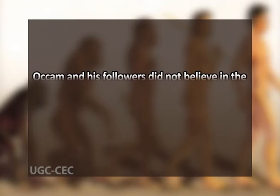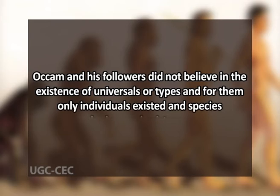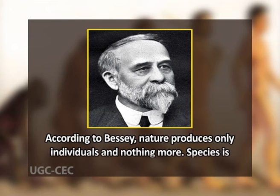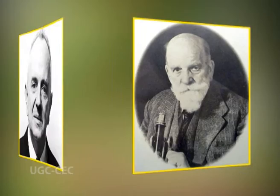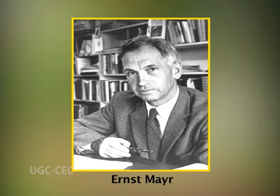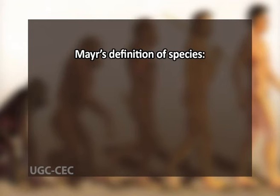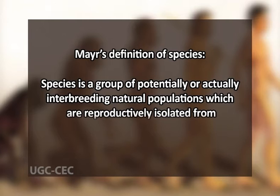The nominalistic species concept, proposed by Occam and his followers, held that only individuals existed and species had no real existence. According to Bessey, nature produces only individuals and nothing more — species is merely a mental concept. However, since species are not human constructs, this concept has also been rejected. The biological species concept was clearly formulated by Jordan, Dobzhansky, and Mayr. Mayr defined species as a group of potentially or actually interbreeding natural populations which are reproductively isolated from other such groups.